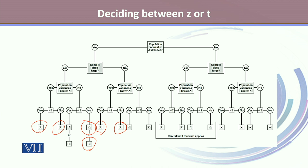On the other side, if the population is not normally distributed but sample sizes are large and population variances are known — whether they are equal or not — we will use Z to calculate the reliability factor.